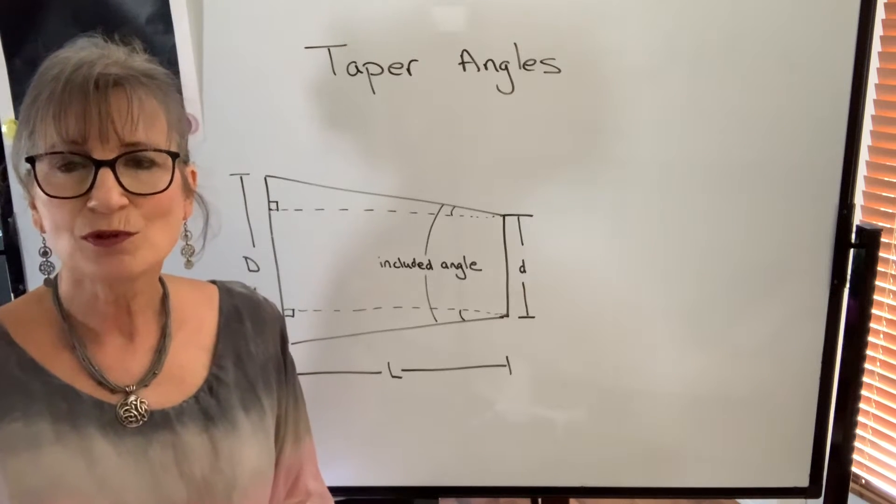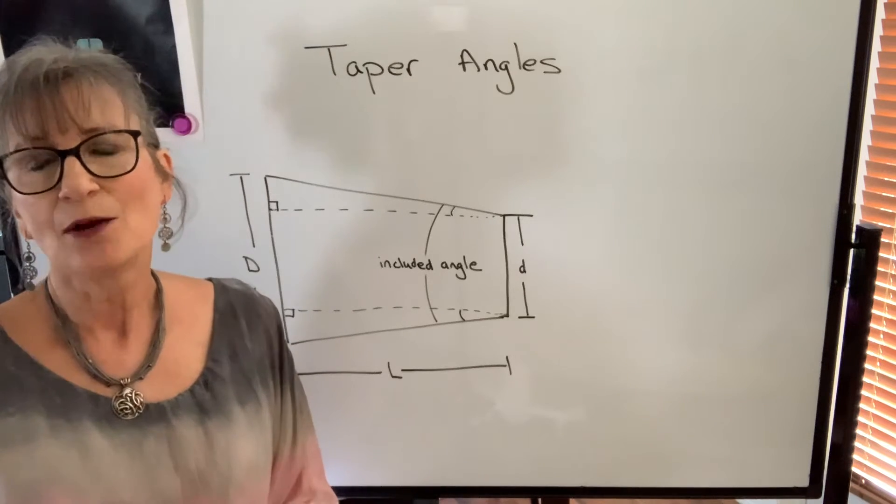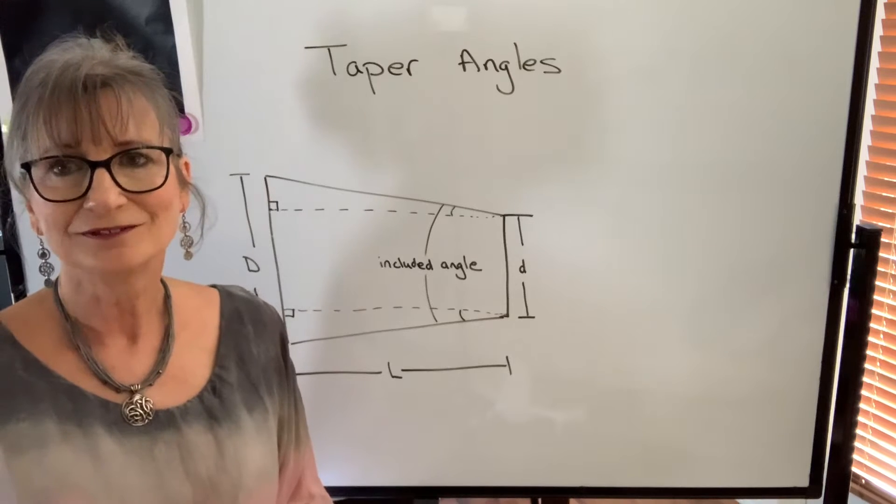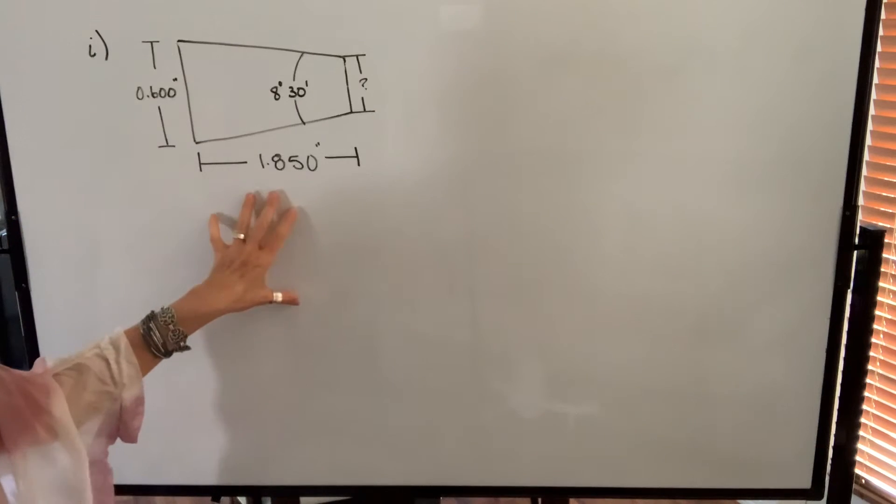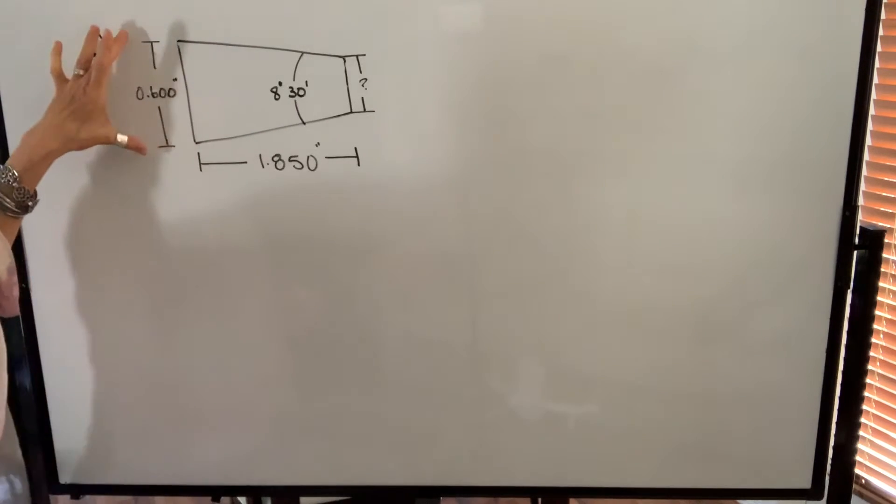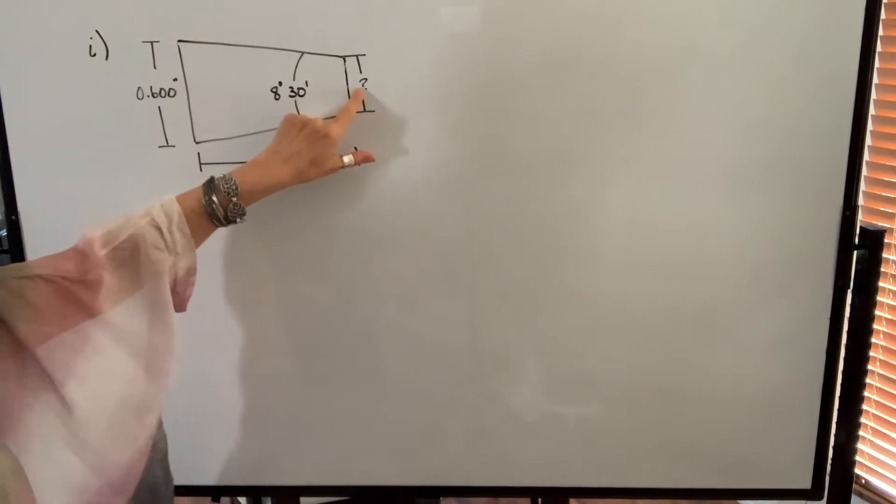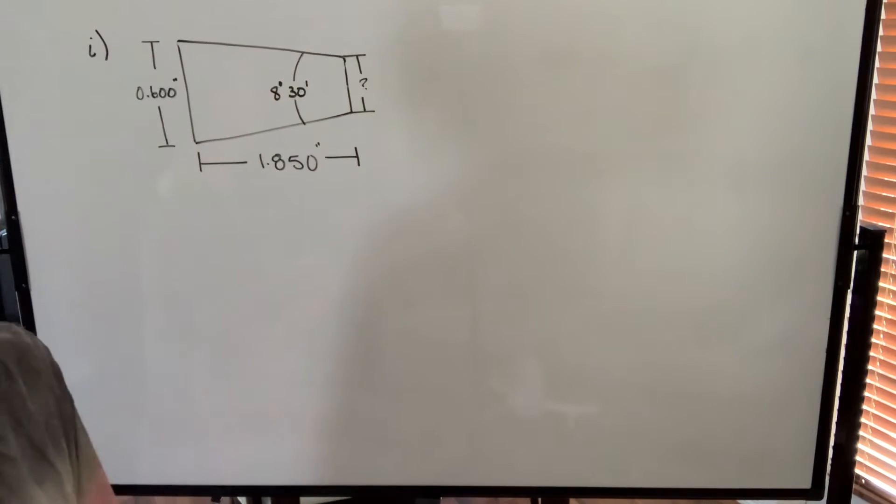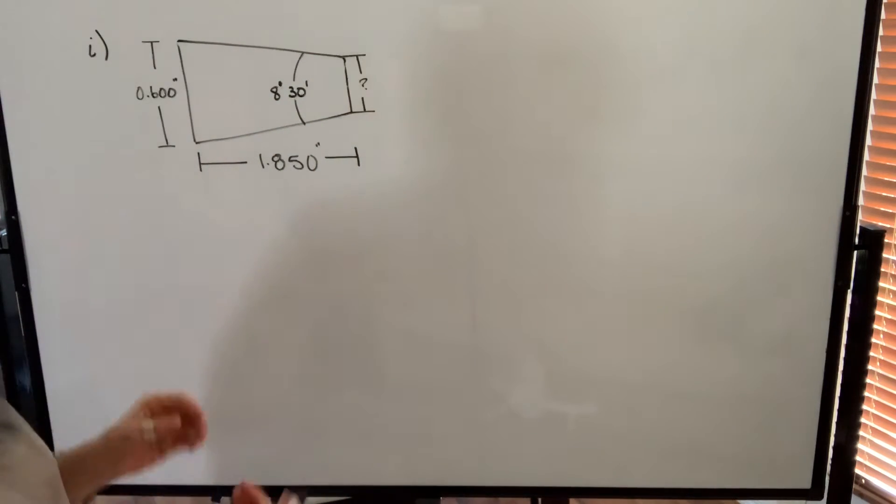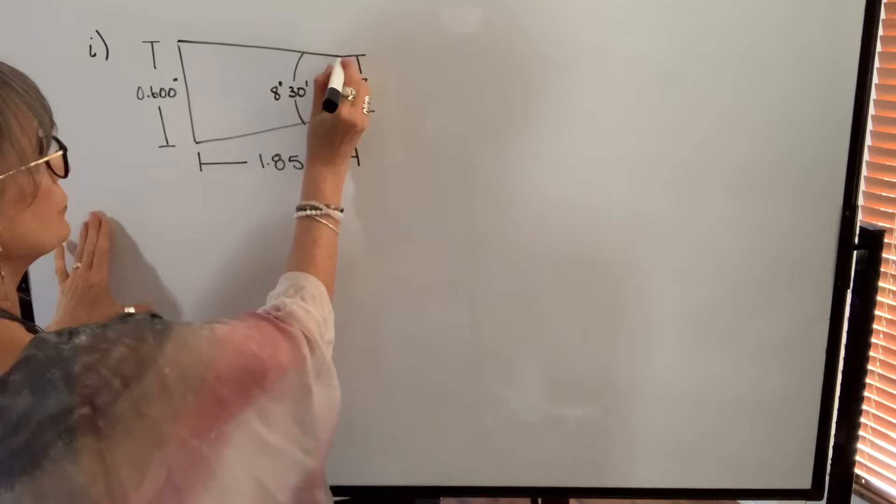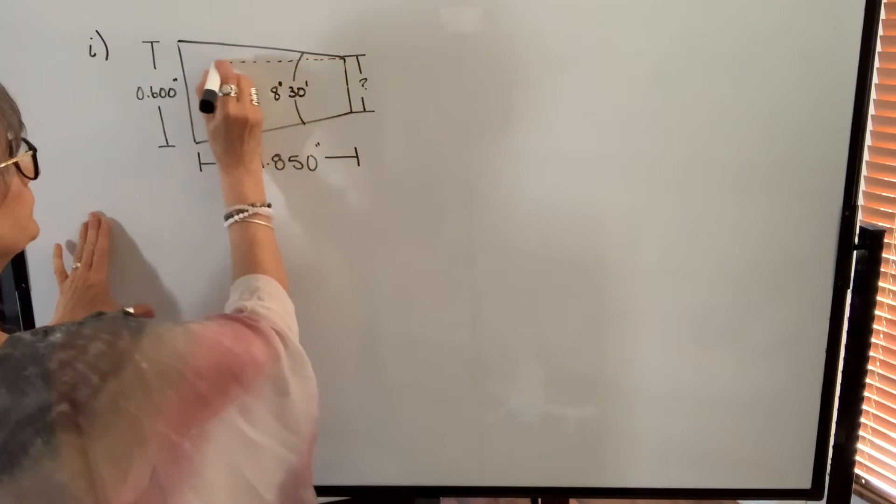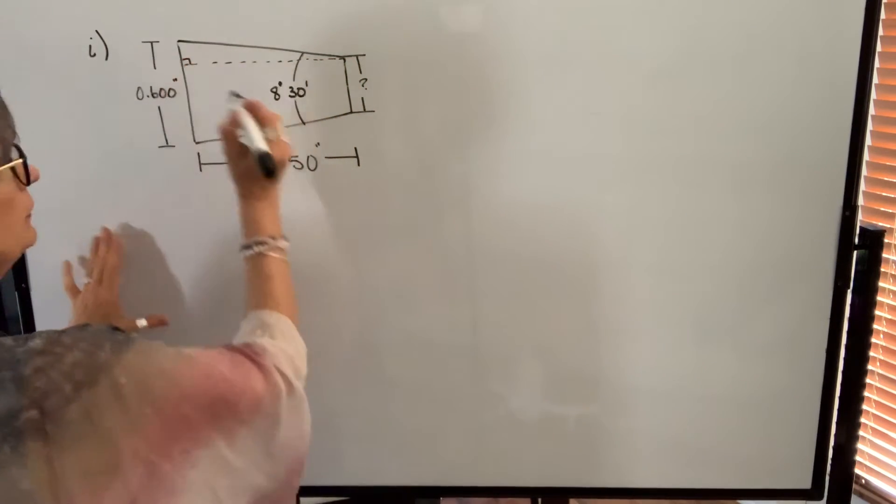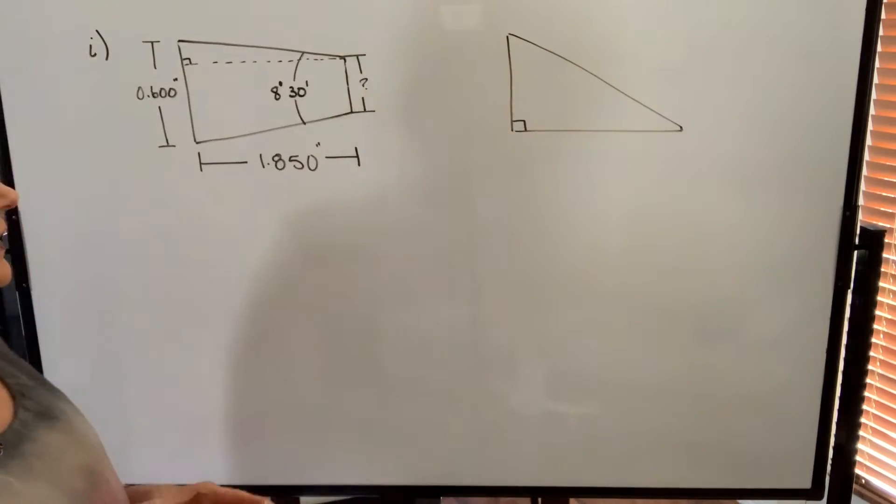So let's take a look at two examples, one where we know the taper angle and one where we're trying to find the taper angle. In our first example we know the large diameter but we don't know the small diameter. We know the length of the taper and we know the taper angle. So what we're going to do is take this top triangle which will be a right triangle and we're going to label the things that we know.